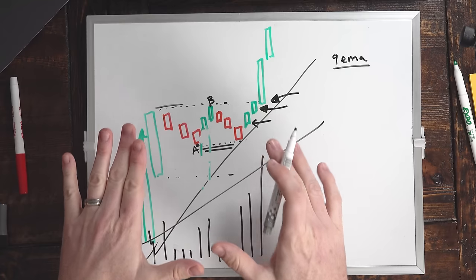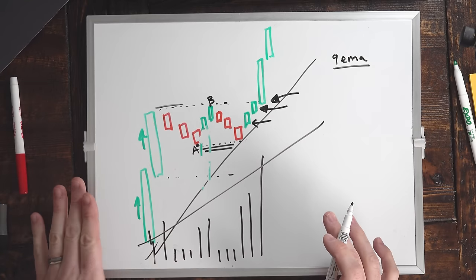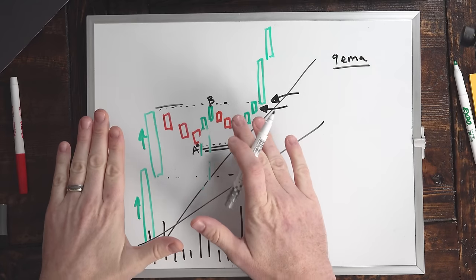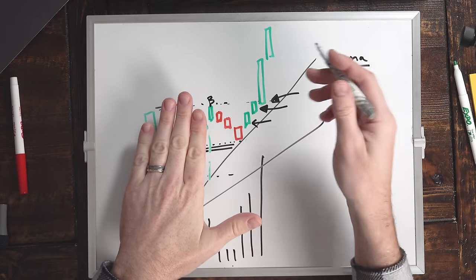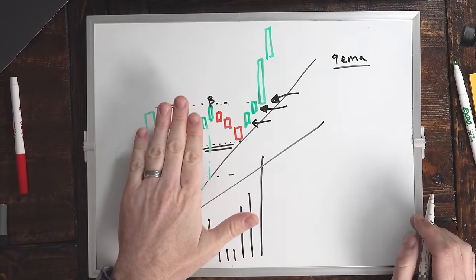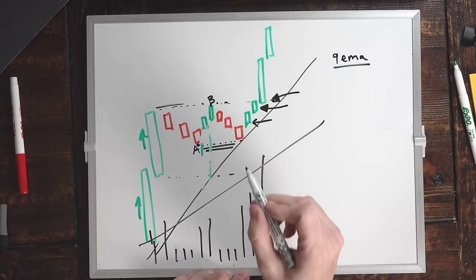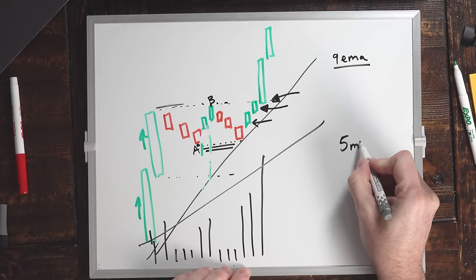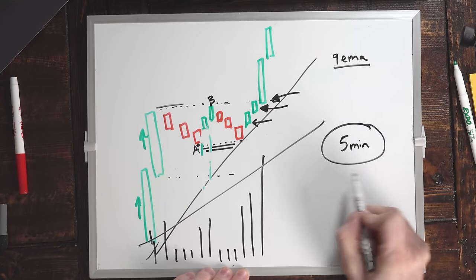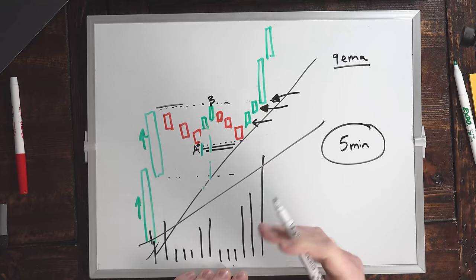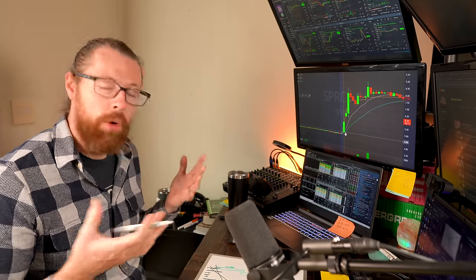Increasing volume means more buyers — people covering short positions and long traders looking to capitalize on momentum. This is the ABCD pattern: part one is a failed bull flag, and part two is the bull flag resolves. They're usually the most powerful on the five-minute chart because it's a very clear pattern that a lot of people have seen, creating more buying volume and resolution.